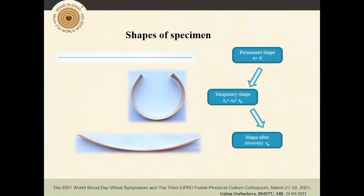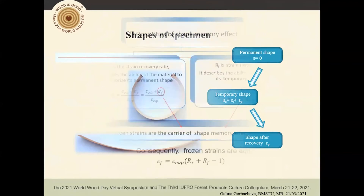The permanent, temporary shapes and shape after recovery are shown on this slide. For quantitative assessment, two important quantities for shape-memory elements were used. Using the model of hygro-thermo-mechanical strains of wood, equations for calculating shape-memory effect quantities were obtained: Rr is the strain recovery rate, describing the ability of the material to memorize its permanent shape; Rf is the strain fixity rate, describing the ability to memorize its temporary shape. The equation for frozen strains is also shown.